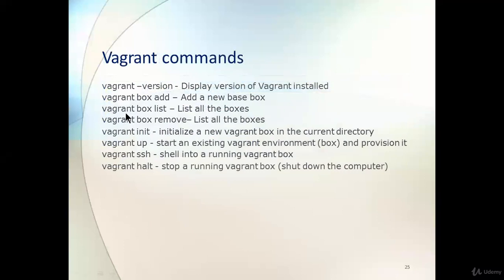Here are the important Vagrant commands: `vagrant version` to check the version, `vagrant box add` to add a new base box, `vagrant box list` to list all boxes, `vagrant box remove` to remove a box, `vagrant init` to initialize — this is a very important command we will use in the next lab. `vagrant up` starts your machine using the configuration in the Vagrantfile. `vagrant ssh` takes you into the SSH session of your Vagrant box.